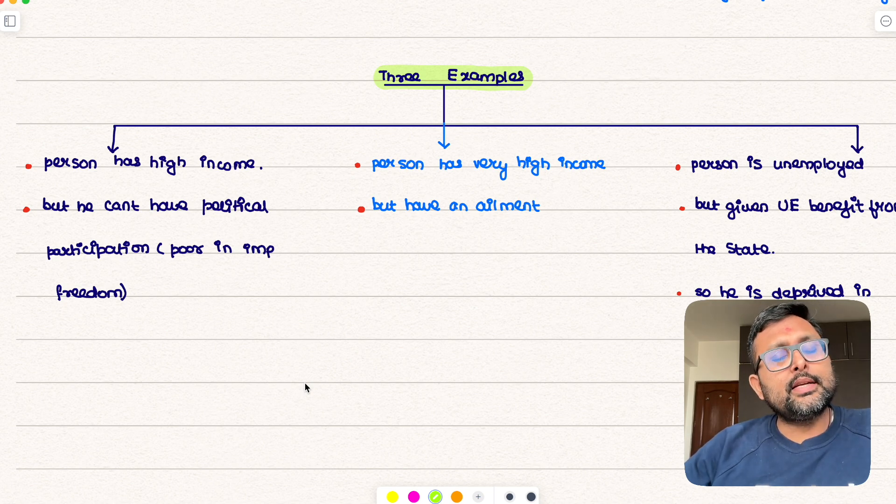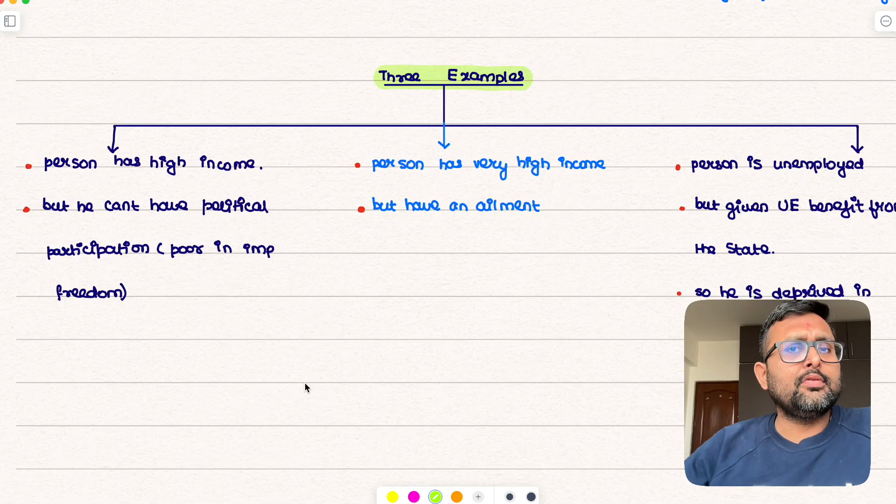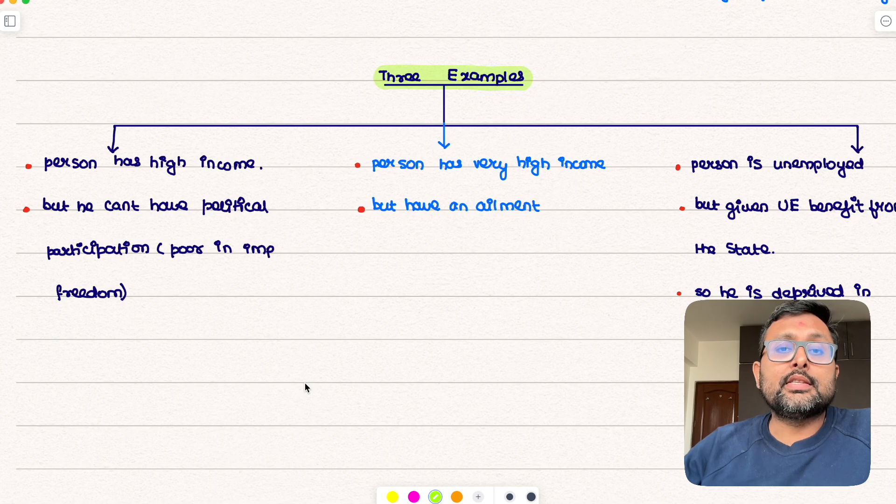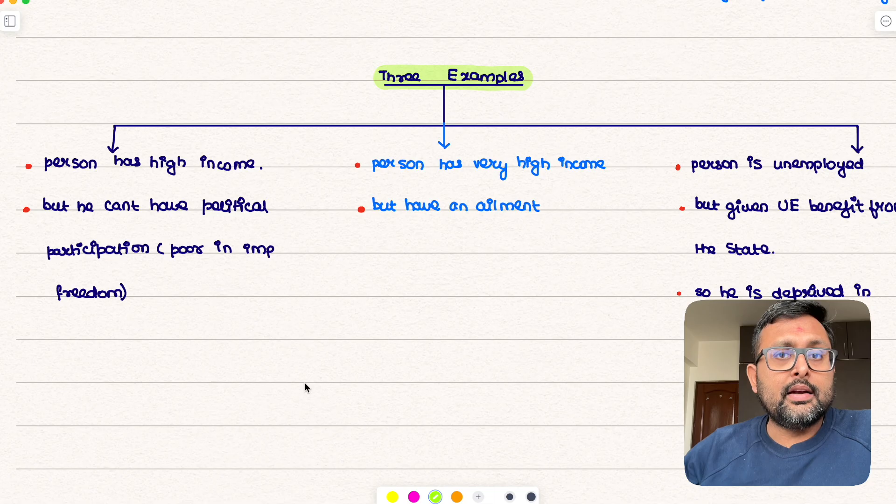Other example he said, very simple example: person has very high income but he has an ailment, he has a very serious chronic disease. Can you say that he is happy? Is he having all kinds of freedom? No.